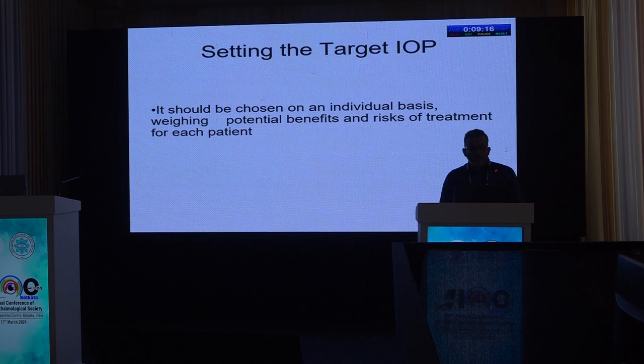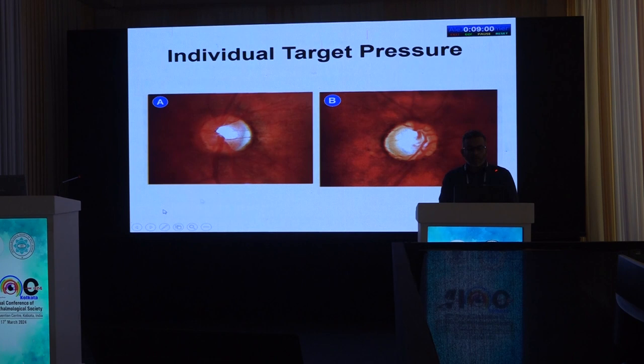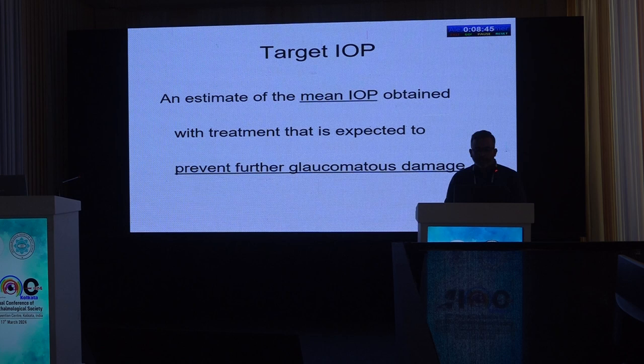All medications have side effects, so we should not over-treat any patient. Two discs that appear different may represent one glaucoma and one physiological cupping. Target IOP is essentially an estimate of the mean intraocular pressure expected to prevent further glaucomatous damage. To customize it, you need to know: the baseline IOP at which damage occurred, since each disc is susceptible to a different level; NTG discs are susceptible to lower IOP and may require an even lower target.